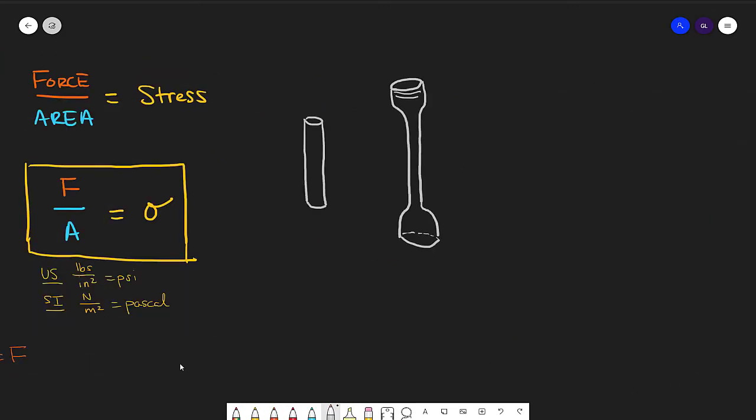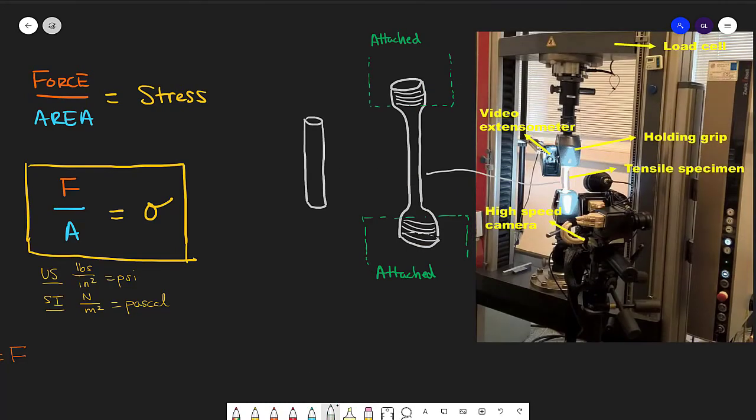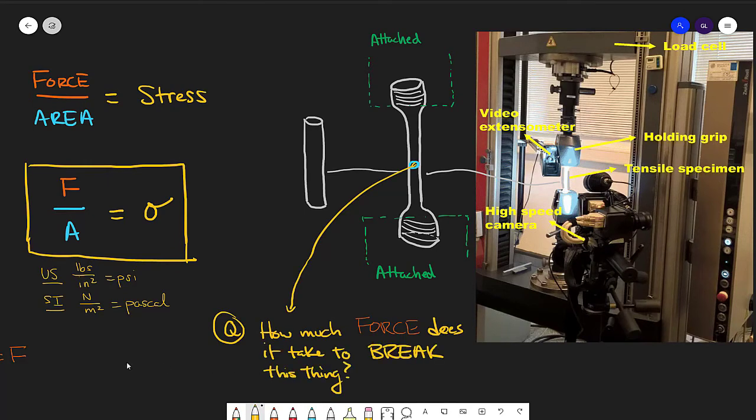The way this is done in practice is we put threads on the end of our bars and we link them up to a big old machine. Machines like this keep track of the force that's required to break a material.